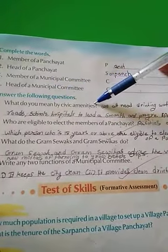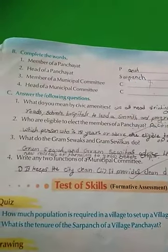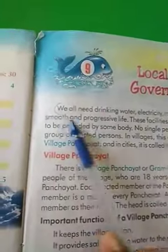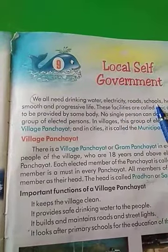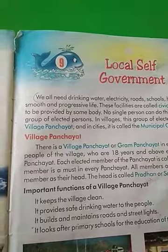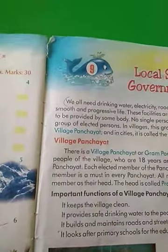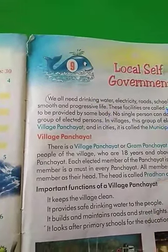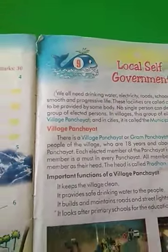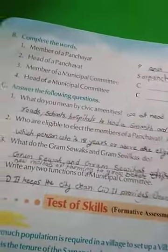Now answer the following questions. What do you mean by civic amenities? Civic amenities किसे कहा जाता है? We all need drinking water, electricity, roads, schools, hospital, etc. to lead a smooth and progressive life. यह सारी चीज़ें — drinking water, electricity, roads, school, hospital — इनसे हमारी life progressive बनती है. तो इसी को कहा जाता है Civic amenities.